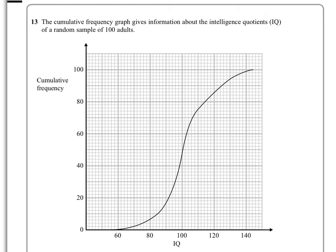In question 13 we're given a cumulative frequency graph that gives information about the IQs, the intelligence quotients, of 100 adults. It's a cumulative frequency graph, so the frequency cumulates, as the name suggests. Because the data is about 100 adults, we know that the graph will slowly level out at 100, the total.